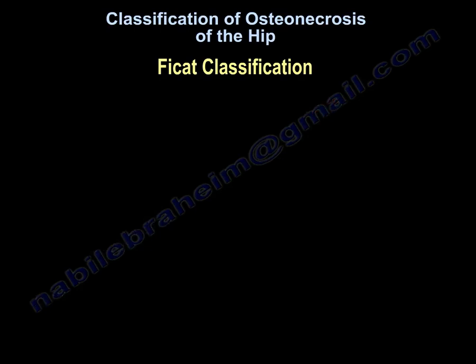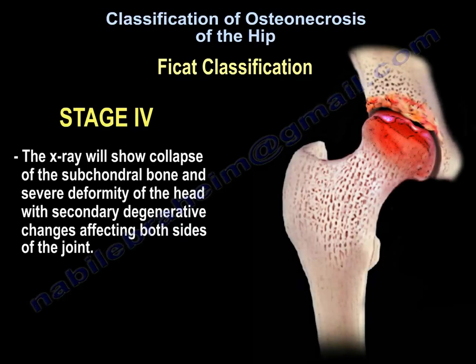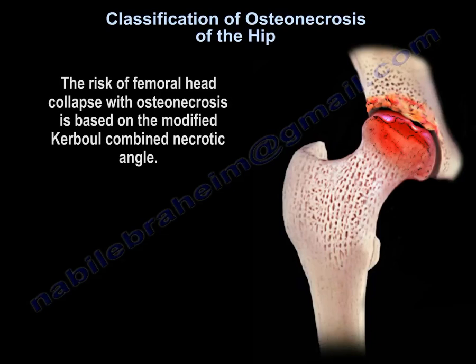Stage four: the x-ray will show collapse of the subchondral bone and severe deformity of the head, with secondary degenerative changes affecting both sides of the joint.